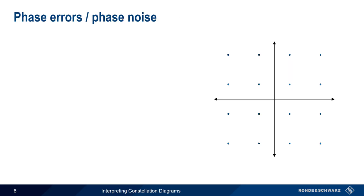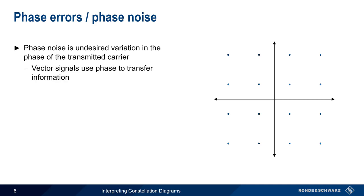Let's start with phase errors or phase noise, because this is very easy to recognize in constellation diagrams. Phase noise is an unintentional or undesired variation in the phase of the transmitted carrier. Since vector signals convey information using changes in phase, random fluctuations in the phase of the signal can lead to incorrect demodulation at the receiver.